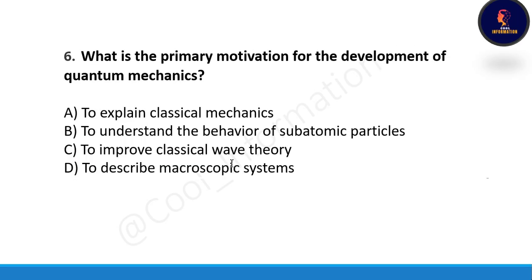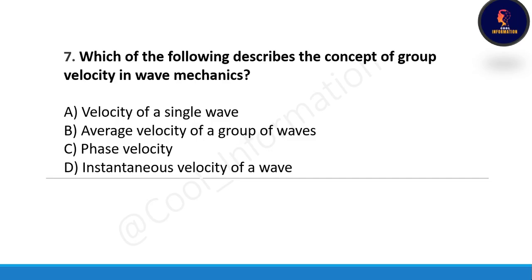Next question: what is the primary motivation for the development of quantum mechanics — option A: to explain classical mechanics, option B: to understand the behavior of subatomic particles, option C: to improve classical wave theory, option D: to describe macroscopic systems? Correct option is B. Next question: which of the following describes the concept of group velocity in wave functions — velocity of a single wave, average velocity of a group of waves, phase velocity, or instantaneous velocity? Correct option is B, average velocity of a group of waves.